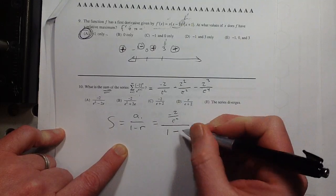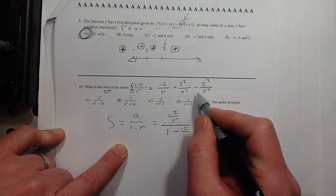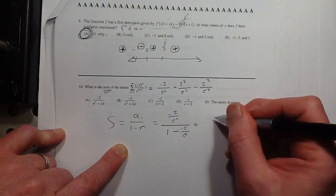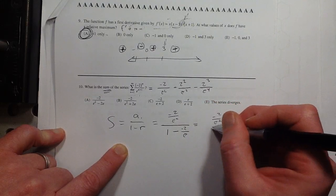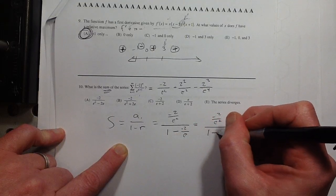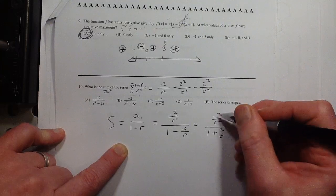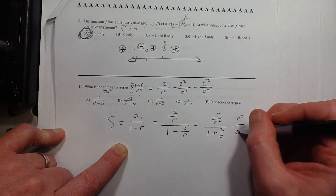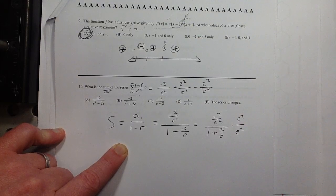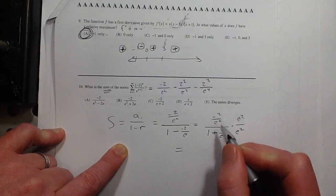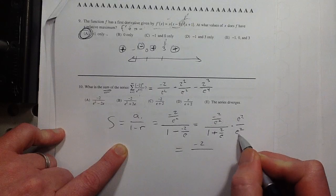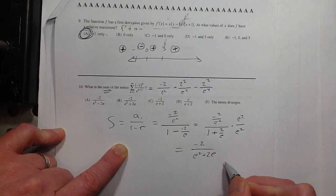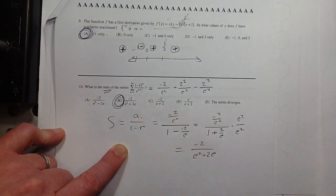So let's see. Let's simplify this. First term over 1 minus, what are we multiplying by here each time? It looks like on the top, I'm multiplying by negative 2. And on the bottom, I'm multiplying by e. So let's see if we can simplify that. I've got negative 2 over e squared. And on the bottom, 1 plus 2 over e. Multiply the top and bottom by e squared. And that'll give me a negative 2 on the top. On the bottom, e squared plus 2e. So that looks like answer choice B.